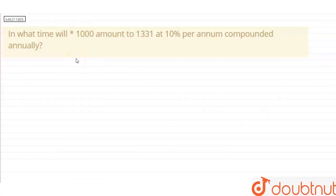In this question, it is given: in what time will 1,000 rupees amount to 1,331 at 10% per annum compounded annually?